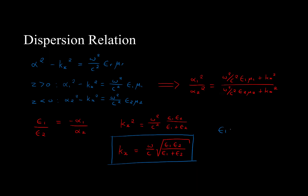This is the dispersion relation for a surface plasmon. Note that if epsilon 1 were to equal negative epsilon 2, kx would approach infinity, while the wavelength lambda would approach 0.